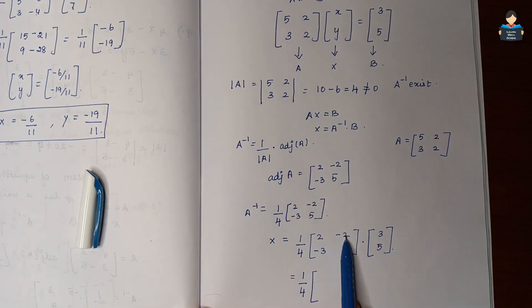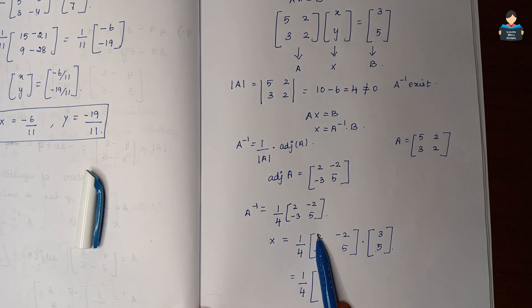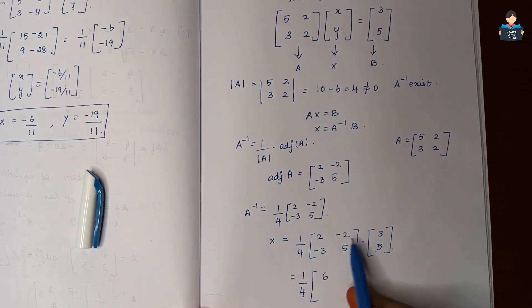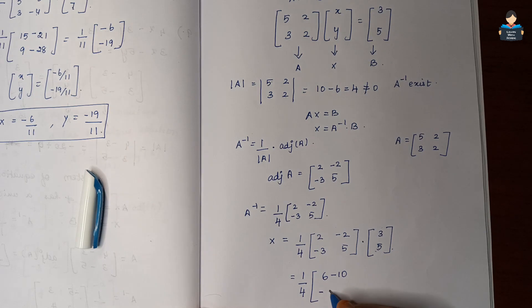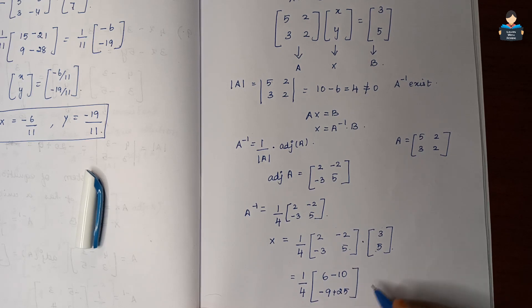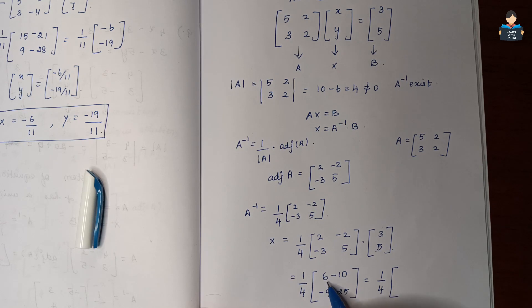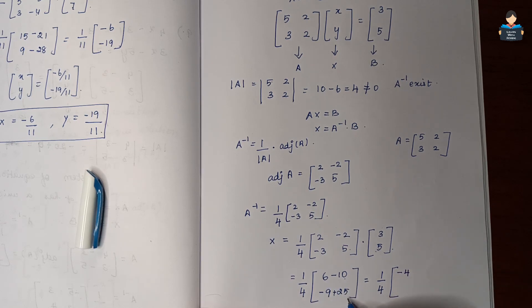Multiplying row by column: first row — 2×3 is 6, minus 2×5 is minus 10. Second row — minus 3×3 is minus 9, plus 5×5 is 25. So we get 1/4 into [6 minus 10; minus 9 plus 25], which is 1/4 into [minus 4; 16].